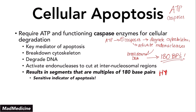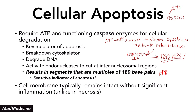Unlike necrosis, the cell membrane is going to remain intact. The reason is that you are killing the cell from the inside, not from the outside — a lot of times necrosis is an extrinsic cause. So even when you have extrinsic apoptosis occurring, the cell membrane will stay intact. Also, you will not have any inflammation, because the reason we typically get inflammation is that intracellular components get released when the cell membrane is damaged. This does not happen in apoptosis.